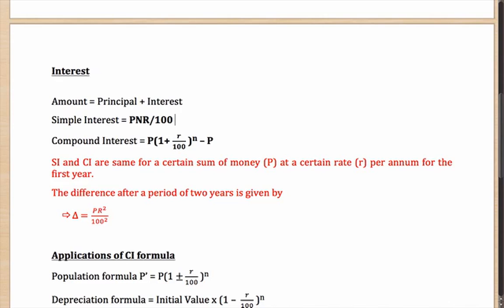In simple interest, let's say you give out 100 rupees to someone at 5% simple interest. Then every year he will pay you back 5 rupees as interest for whatever be the period of time. In the first year he will pay you 5 rupees.